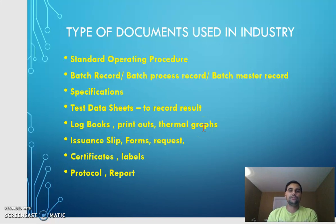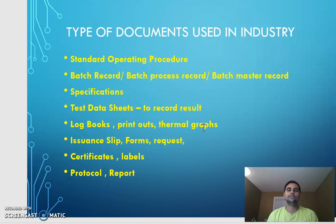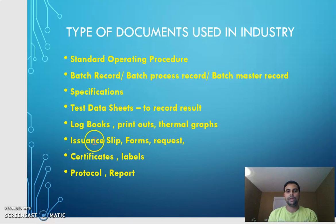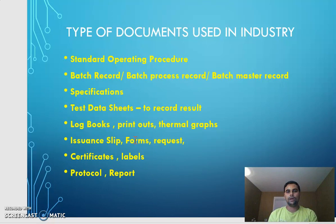Log books are used by all departments. Printouts are used by every department. Thermal graphs are specifically used in warehouse and manufacturing where there are temperature requirements — for example, a product has to be stored at 25 degrees centigrade, not more than that. Wherever temperature recording is needed, thermal graphs will be available. Issuance slips, forms, and requests are simple documents used in any pharmaceutical company for product or document issuance, requesting old executed documents, or requesting reports. Even an auditor requesting something must go through a form and undergo an approval process so that the required authorities know who requested what and for what purpose.